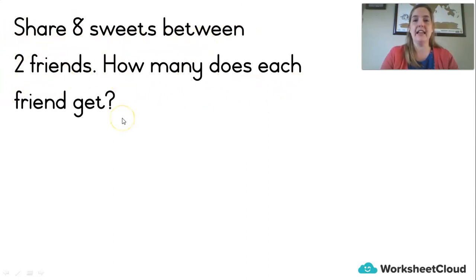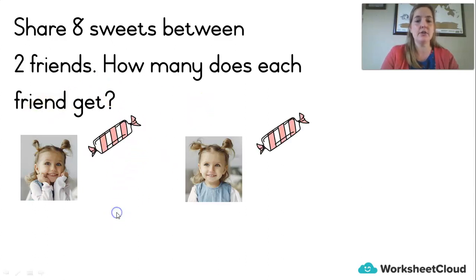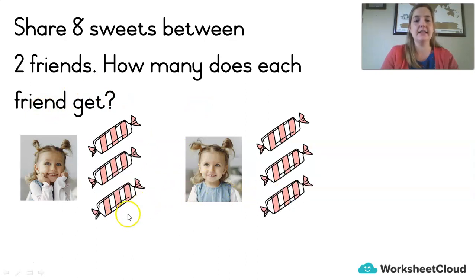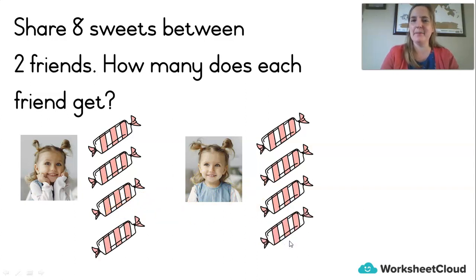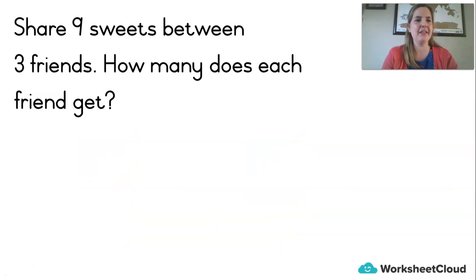How many does each friend get? We're drawing pictures. Let's do our friends first — one friend, two friends. Now we're going to share the eight sweets. Easy peasy! And how much do they each get? Let's count — four sweets! We did another one. This is getting easier — let's go, another one!